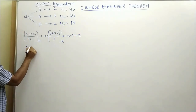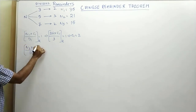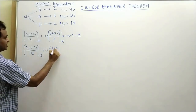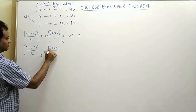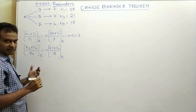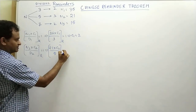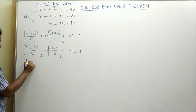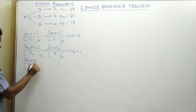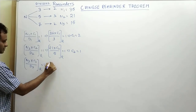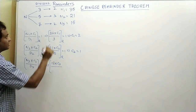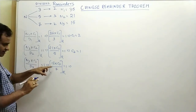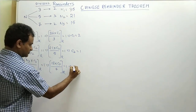Similarly, we find c2 such that n2 × c2 divided by d2 gives a remainder of 1. Here n2 = 21 and d2 = 5. Since 21 divided by 5 gives a remainder of 1, c2 = 1. For c3, we need n3 × c3 divided by d3 to give a remainder of 1. Here n3 = 15 and d3 = 7. Since 15 divided by 7 gives a remainder of 1, c3 = 1.